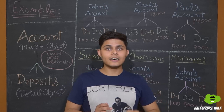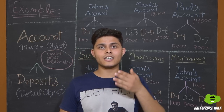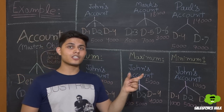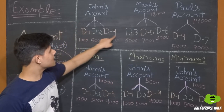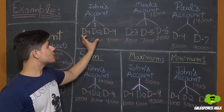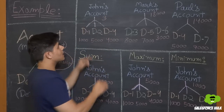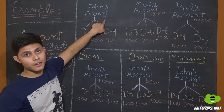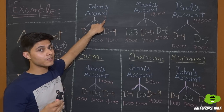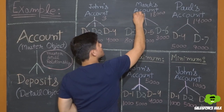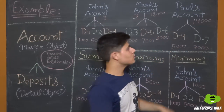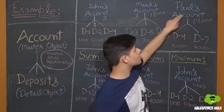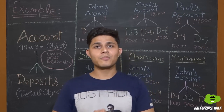The count operation does not require any field to be aggregated — it simply displays the count of child records present on that particular master record. If we create a Rollup Summary Field with count operation, John's account has three child records, so it will display 3. Similarly, Mark's account will also show 3. Paul's account has only two child records related to it, so it will display 2. This is how Rollup Summary Fields work.